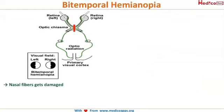Let's discuss bitemporal hemianopia — it's easy to understand but also easy to get confused. I'll try to simplify so you can easily remember. Looking at this picture, the temporal field of the left eye as well as that of the right eye is lost. This is termed bitemporal hemianopia.